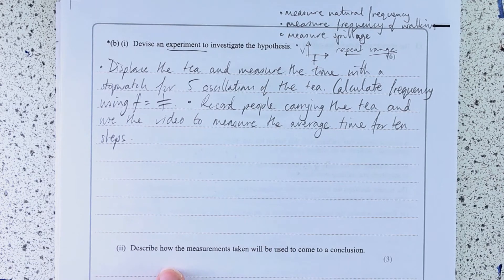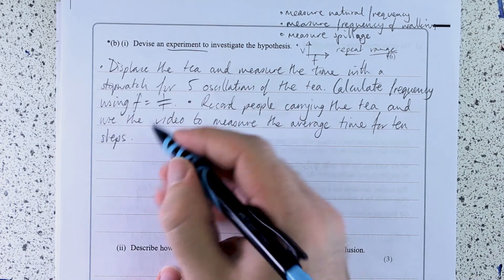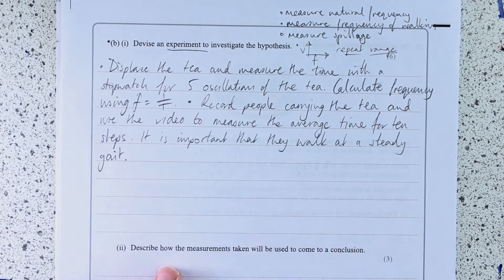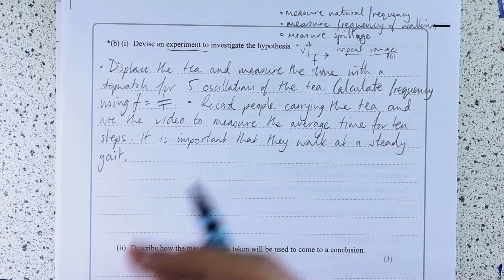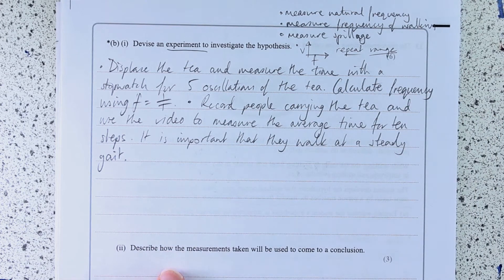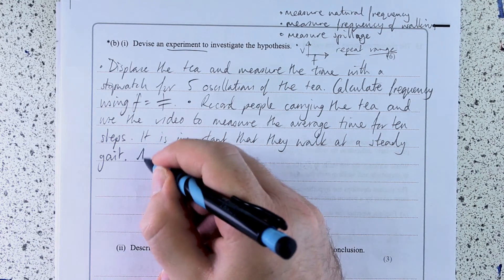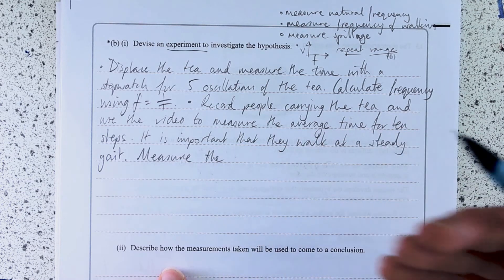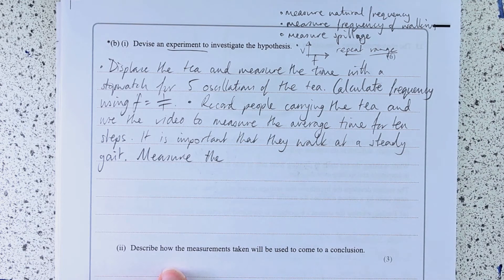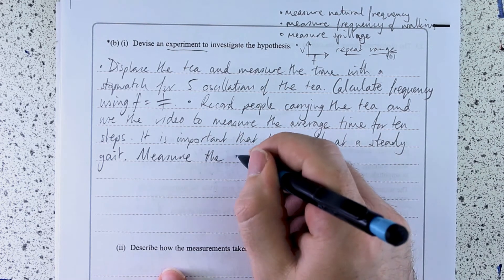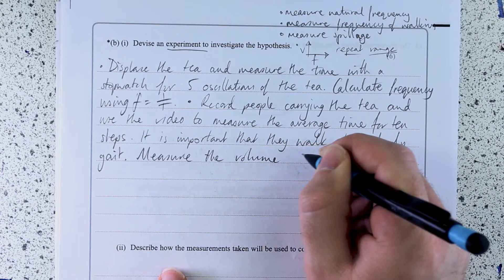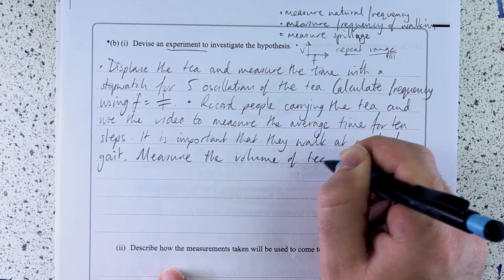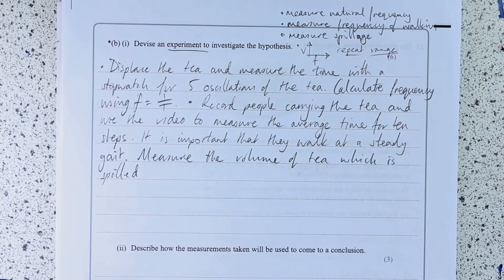It's important that they're walking at a steady gait. What I'm going to do is measure how much tea has been displaced or has been spilt. What am I really going to measure about that? I'm not going to measure the number of blooming molecules, am I? I'm going to measure the volume of tea, which is displaced.